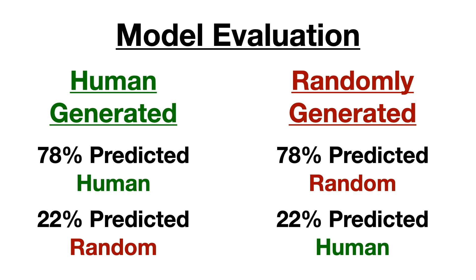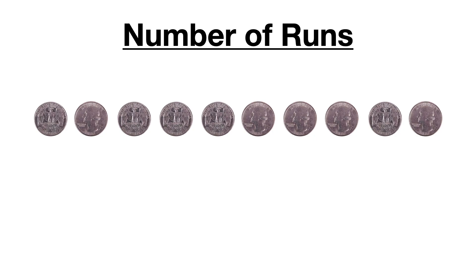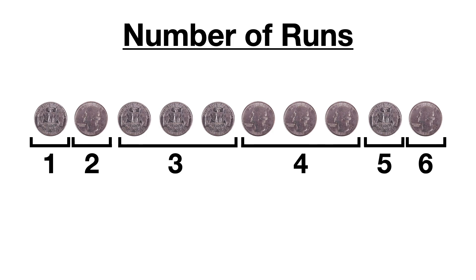Here were some of the largest differences that I found. First, let's take a look at the number of runs in a sequence of coin flips for each group. A run here is just a section of flips where the same side of the coin shows up in a row. For example, in the sequence below, there would be six runs. In this graph, the blue shows the distribution of the number of runs for the computer generated sequences, and the orange shows the distribution for the ones made by people. We can see that the human made sequences tend to have more runs in their set of 50 flips.